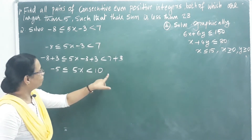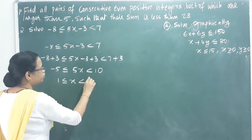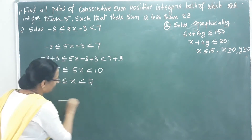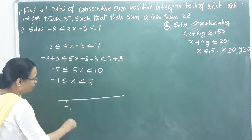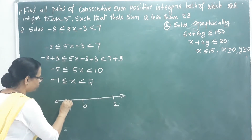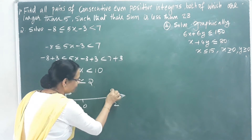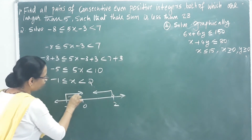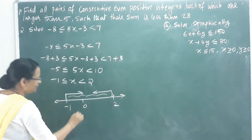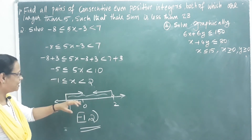Dividing all parts by 5 gives: negative 1 less than or equal to x less than 2. On the number line, we mark negative 1 as included (closed circle) and 2 as excluded (open circle). The interval is [negative 1, 2). These values make the original statement true.